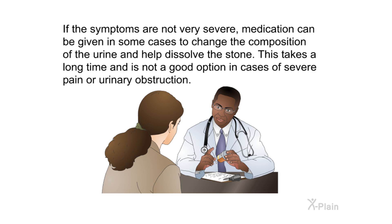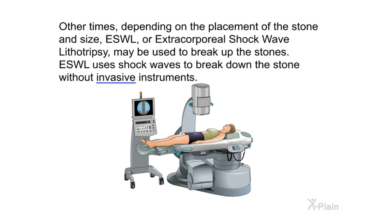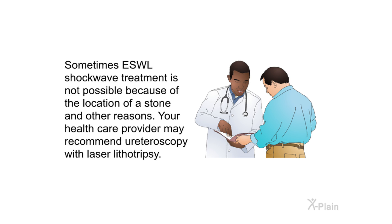If the symptoms are not very severe, medication can be given in some cases to change the composition of the urine and help dissolve the stone. This takes a long time and is not a good option in cases of severe pain or urinary obstruction. Sometimes the urologist can only reach the stone by making an incision in the back and placing the scope into the kidney and down the ureter. This surgical procedure is known as percutaneous stone removal. Other times, depending on the placement and size of a stone, ESWL — or extracorporeal shockwave lithotripsy — may be used to break up the stones.